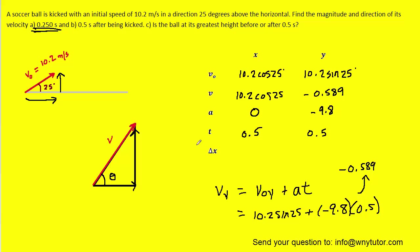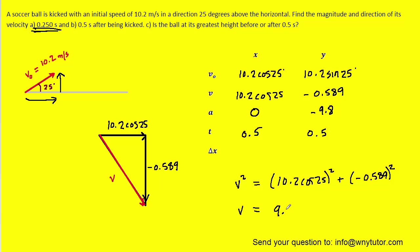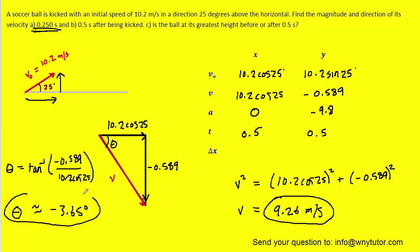We draw a different triangle because the final velocity in y is now negative. In the x direction, the final velocity is positive 10.2 cos 25, pointing right. In the y direction, it's negative, so we project it downward. Using the Pythagorean theorem, we get approximately 9.26 meters per second for the magnitude. For the direction, we use the inverse tangent of negative 0.589 divided by 10.2 cos 25, which gives approximately negative 3.65 degrees. So the final magnitude is 9.26 meters per second, and part B is solved.